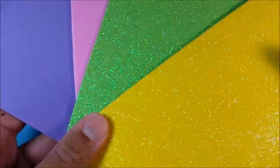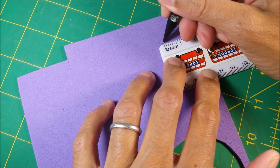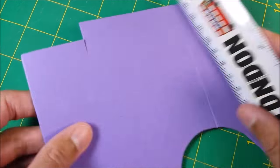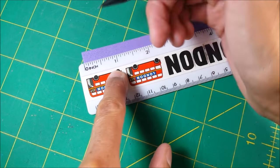I select my craft foam, cut it so that it is just over one inch tall, and then I make my mark at the one-inch mark or just under.